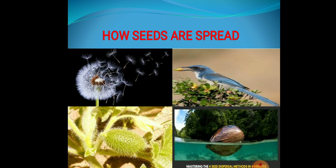Some seeds stick to the fur of animals or on our clothes because they have some thorn-like or hook-like things on their cover. So these seeds easily stick to the fur of animals or our clothes and are carried to different places. This gave George Mestral the idea of how Velcro was invented.